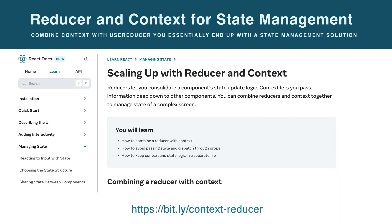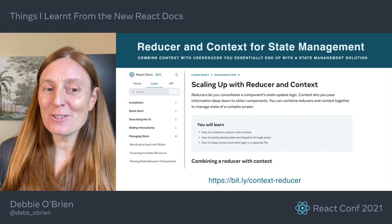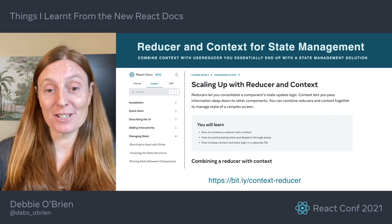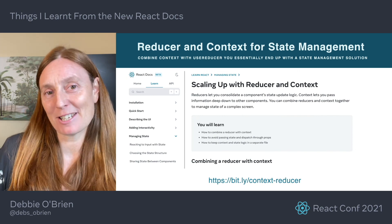Sometimes you have a lot of state logic that gets complicated. There is a hook for that called useReducer, which allows you to consolidate all the state logic into one place outside of your component. Instead of setting state, you dispatch actions, and this can be done by writing a reducer function. Reducer is named after the array.reduce method. React reducers take the state and the action and return the next state. So if you combine context with useReducer, you essentially end up with a state management solution.